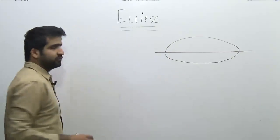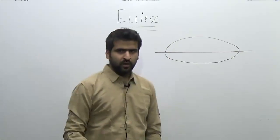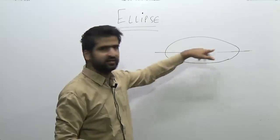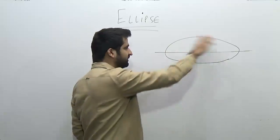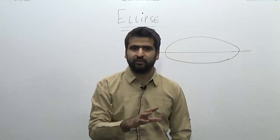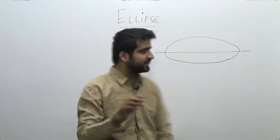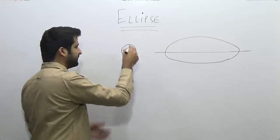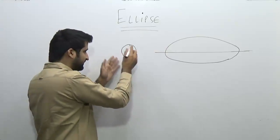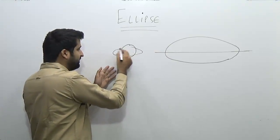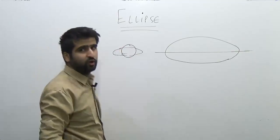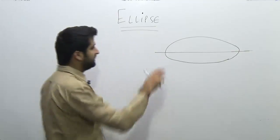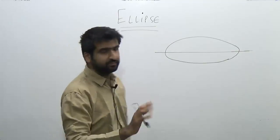Let's start with the next shape of the conic section, which is the ellipse. We must be pretty much acquainted with the fact of what an ellipse is. The shape of an ellipse is something like this — it is an oval shape. In layman's language, you can say that this is a squeezed circle. If you take a circle and squeeze it, the ends will elongate and the middle part will shorten. So this is the basic shape of an ellipse.